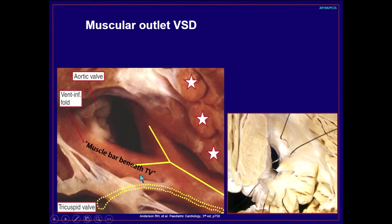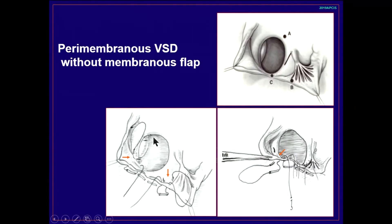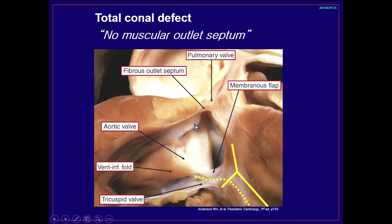As you can see here, in this defect, you can see the muscle bar beneath the tricuspid valve. This muscle bar is formed by a fusion of the ventricular infundibular fold and the well-developed posterior limb of the trabecular septum marginalis, so there must be an intact membranous septum here. This muscle bar is a very good site for anchorage of the VSD patch. About one type of patient has a defect like this. If there is no membranous flap or muscle bar beneath the tricuspid valve, we have to make stitches at the base of the tricuspid valve during VSD closure to avoid conduction bundle system damage.